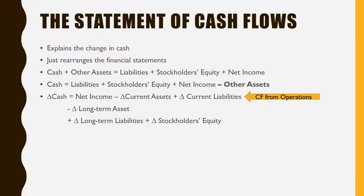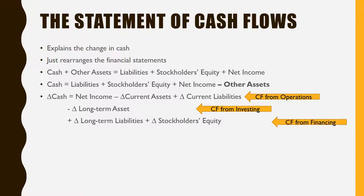Accountants aren't too creative in titles. The change in long-term assets is the cash flow you get from investing into your company — buying new equipment, selling equipment. This is one of the places where, while you like to see positive cash flows from operations, it's okay to see negative cash flows from investing, because that means you're buying more equipment than you're selling. And then lastly, cash flows from financing: changes in long-term liabilities and stockholders' equity — that's how you financed your operations.